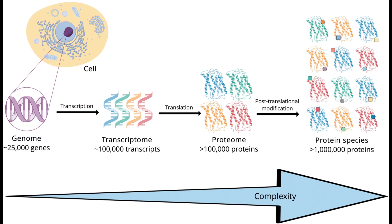Within the last few decades, scientists have discovered that the human proteome is vastly more complex than the human genome. While it is estimated that the human genome comprises between 20,000 and 25,000 genes, the total number of proteins in the human proteome is estimated at over 1 million.